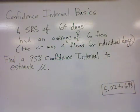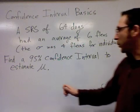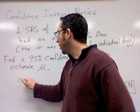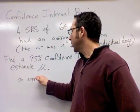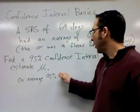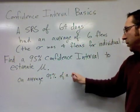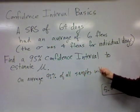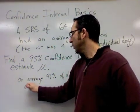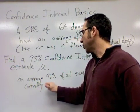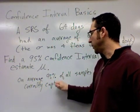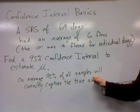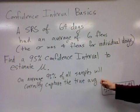And there are some popular phrases that you should use to explain it. The two that I like the most would be to interpret the interval this way and say that on average, 95% of all samples will correctly capture or obtain the true average from the population.